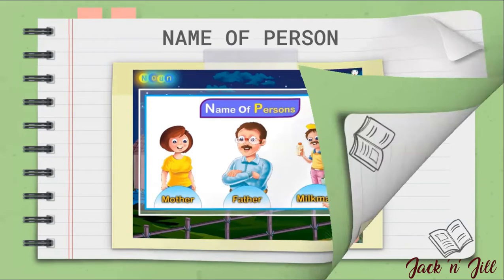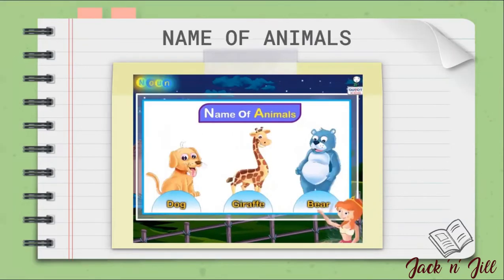Here we find examples of the name of an animal. Look at this picture. We find dog, giraffe, bear. Can you see some more examples? Yes — elephant, lion. Excellent, kids! Shall we move to the next slide?